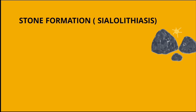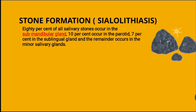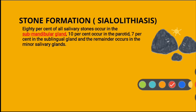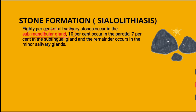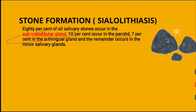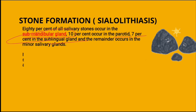Starting with stone formation or sialolithiasis: 80% of all salivary stones occur in the submandibular gland — this has been asked multiple times. 10% occur in the parotid and 7% in the sublingual gland; the remainder occurs in minor salivary glands.